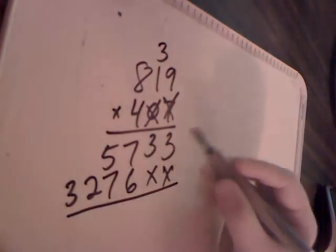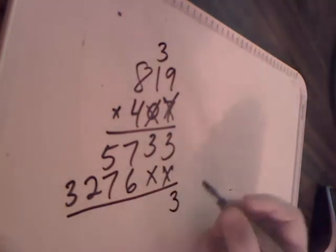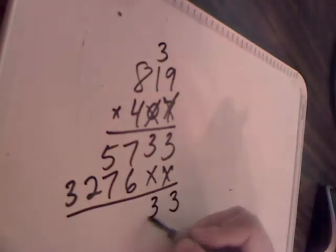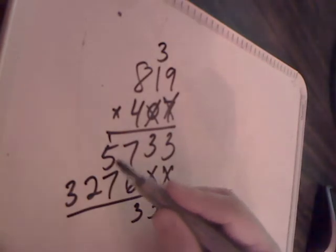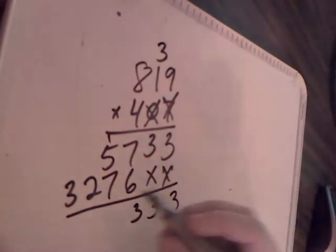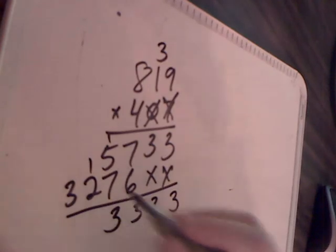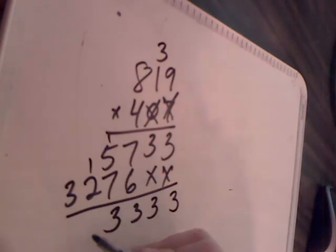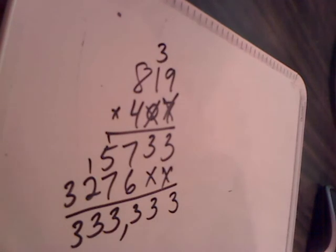Now when we add all these numbers up, 3 plus nothing is 3. 3 plus nothing is 3. 7 plus 6 is 13. 5 plus 7 is 12. Plus the 1 is 13. 2 plus 1, excuse me, is 3. And then another 3 right there. So you have your answer of 333,333.